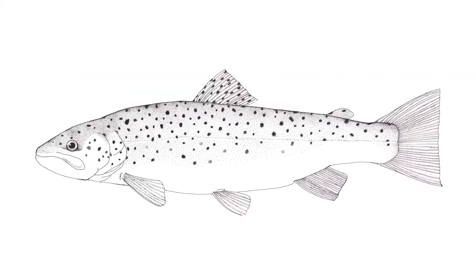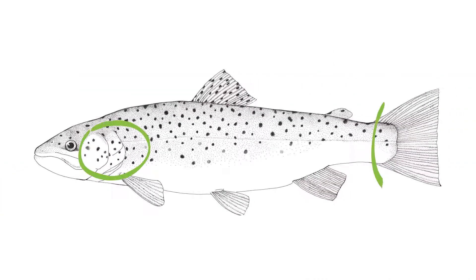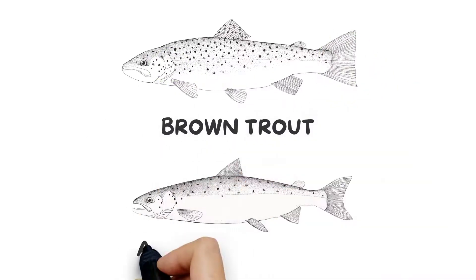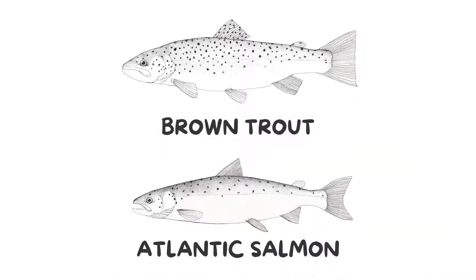If you see spots on the gill cover but none or very few on the tail, you have either a brown trout or Atlantic salmon.